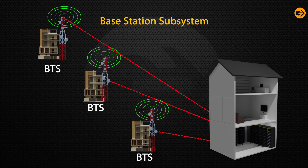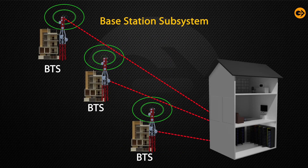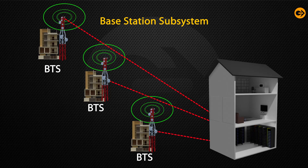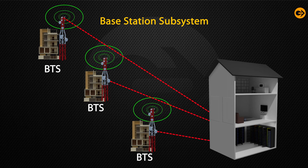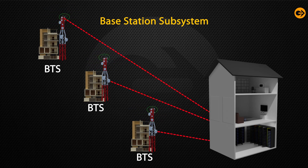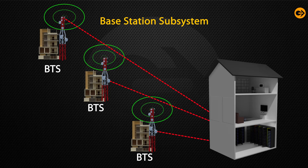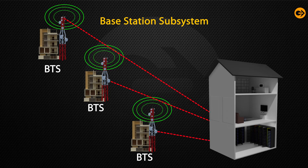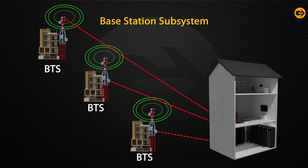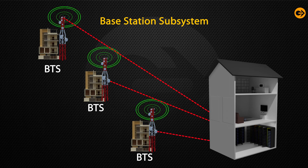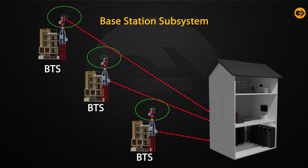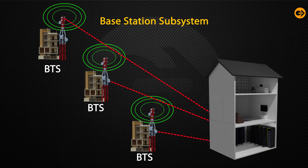The base station subsystem functions as the interface among the mobile station and the network subsystem. The base transceiver station contains the radio transceivers and controls the protocols for communication with mobiles. It also consists of the base station controller that operates the base transceiver station and works as an interface between the mobile station and mobile switching center.